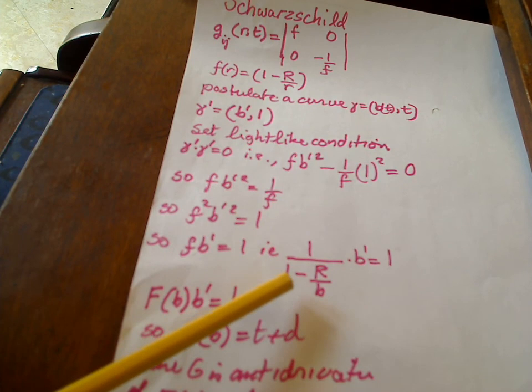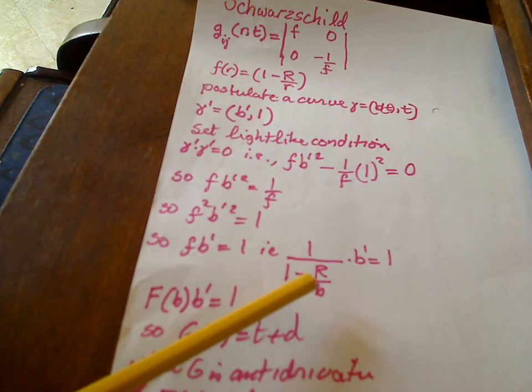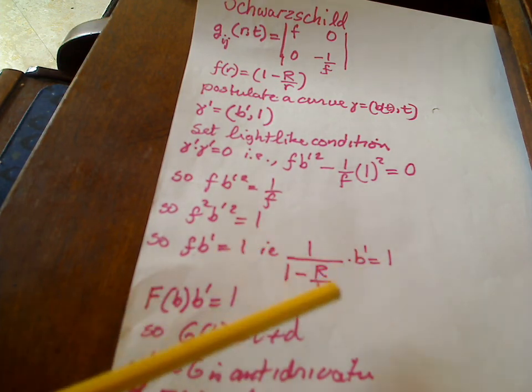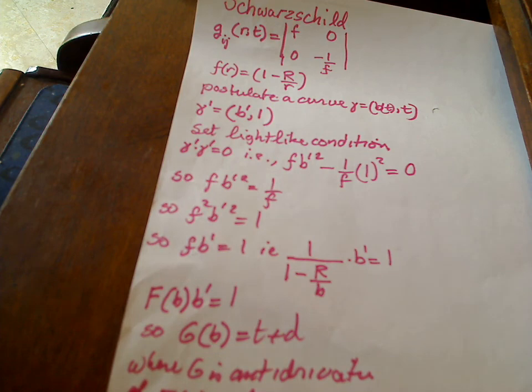So we had to have the little r replaced by b here, so we did, and this is what the differential equation reduces to: one over (1 - R/b) times b' equals 1. But notice that this has this form: some function of b times b' equals 1. If you notice that looks like the derivative of something else.